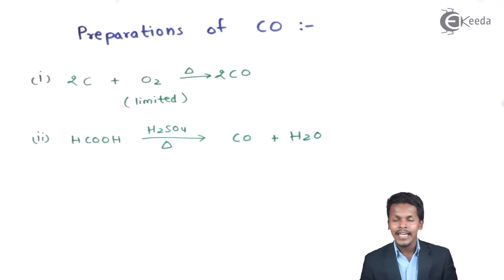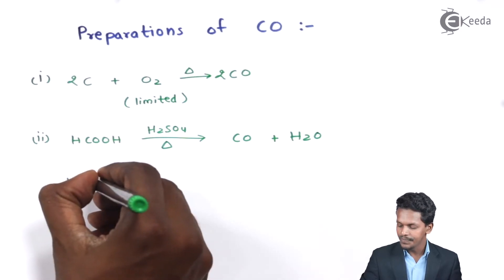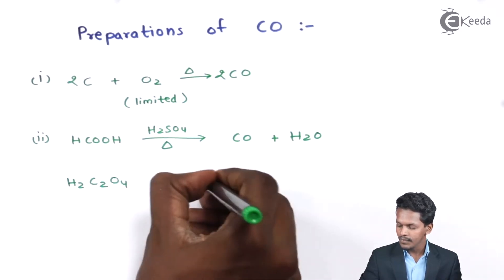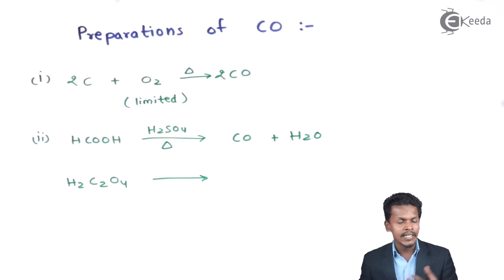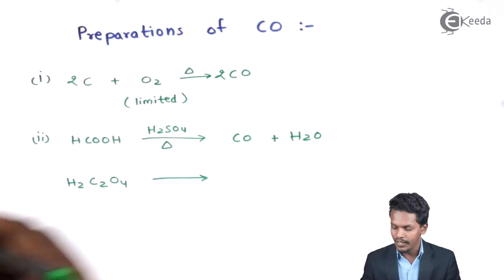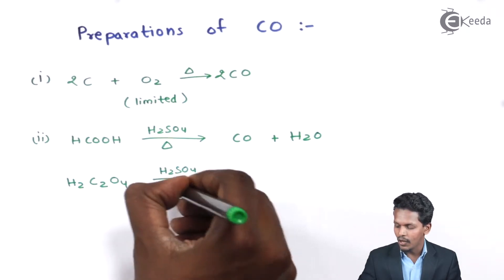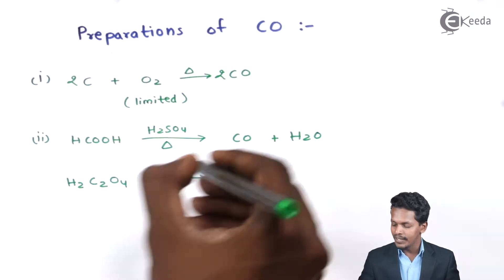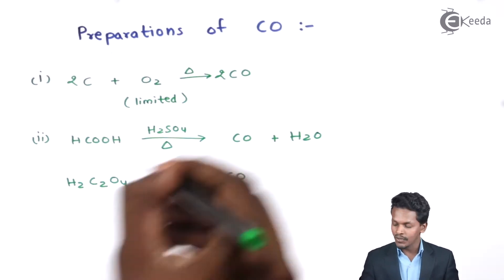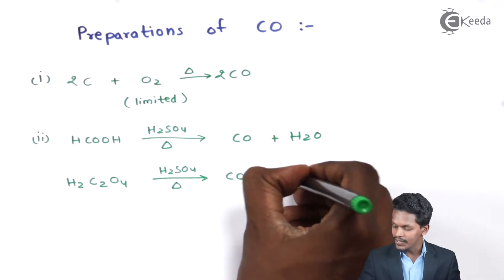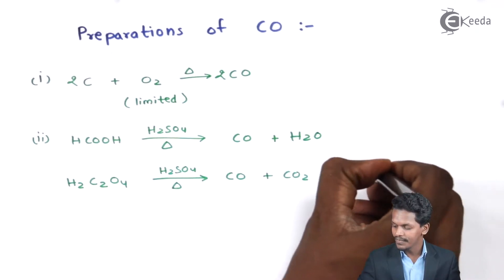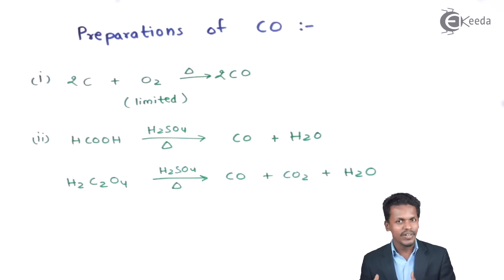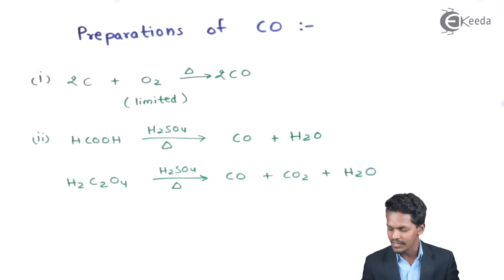Carbon monoxide can also be obtained from oxalic acid, represented as H₂C₂O₄. If it undergoes dehydration using sulfuric acid with heat, the products obtained are carbon monoxide, carbon dioxide, and H₂O. Since water is released, this is also called a dehydration process.